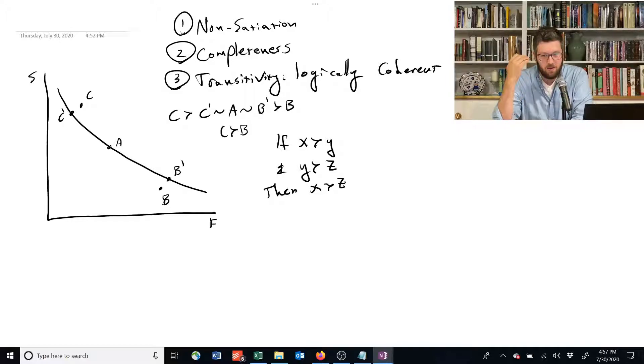One of the implications of this is that indifference curves cannot cross. So if we go back to this, let's focus on this point C. We could make the same arguments about non-satiation and completeness to draw an indifference curve through C.